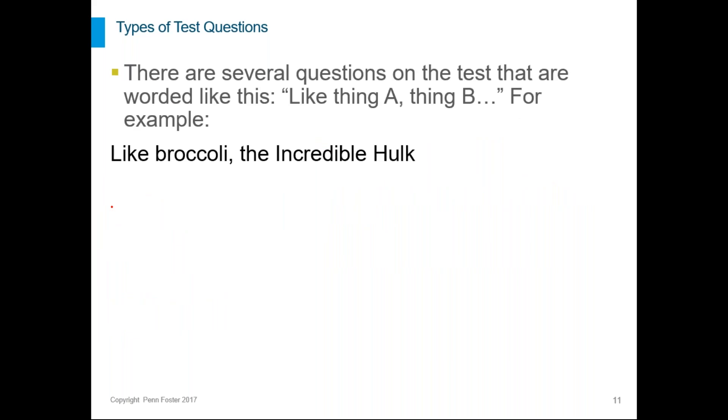Now, if that isn't confusing enough, there's also questions like this where they're worded where they say like thing A, thing B, blank. So for example, like broccoli, the incredible hulk, dot dot dot. So we have to figure out what is true about both of them. So again, we're thinking, okay, we're finishing the sentence, thing B, dot dot dot. So what's true about thing B? And also, because it's like thing A, it has to also be true about thing A.